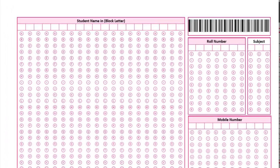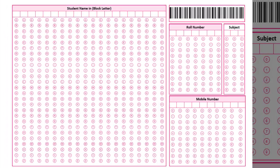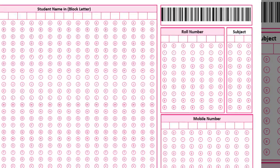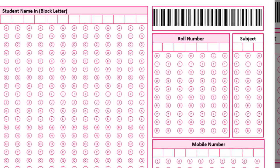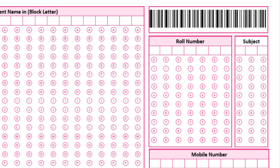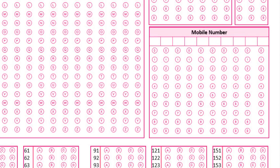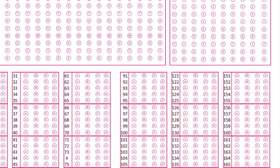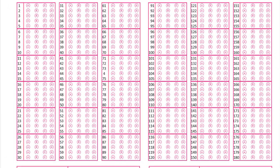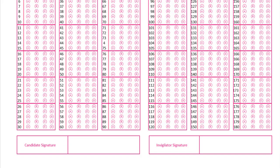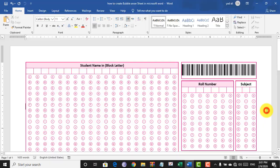In this video we will learn how to create a bubble answer sheet in Microsoft Word 2019. On the left side: student name in block letters; on the right side: barcode, below that the roll number portion, subject, mobile section. Then we create the main section with 180 MCQs, and at the bottom candidate signature and invigilator signature. Let's get started.